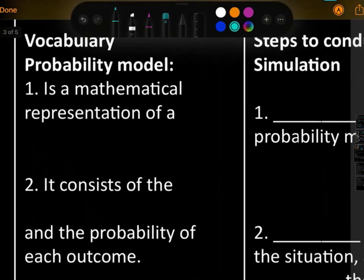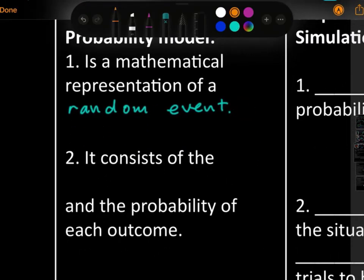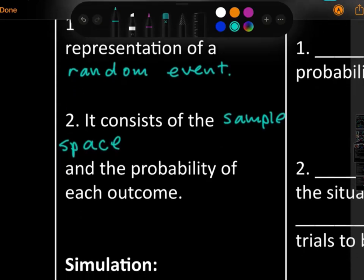So what is a Probability Model? A Probability Model is a mathematical representation of a random event. What's the probability that it's gonna rain today? What is the likelihood of catching COVID when you go outside with no mask, right? That's like a probability model. Something that happens. It consists of the sample space and the probability of each outcome.